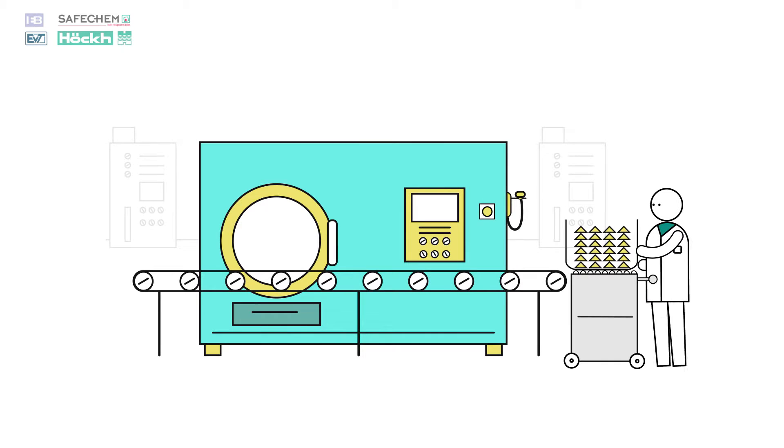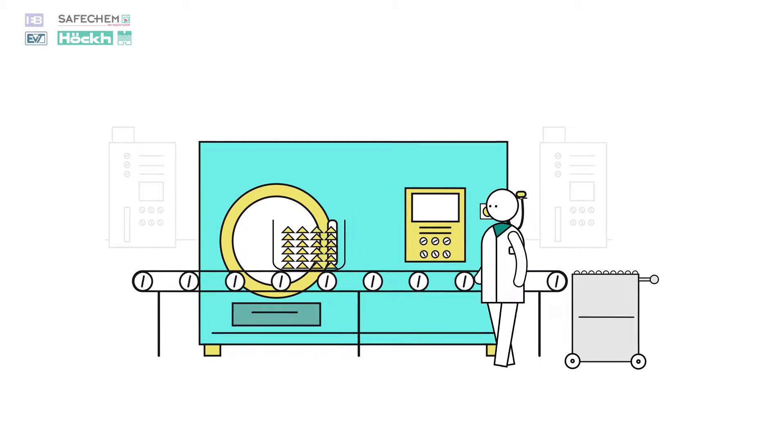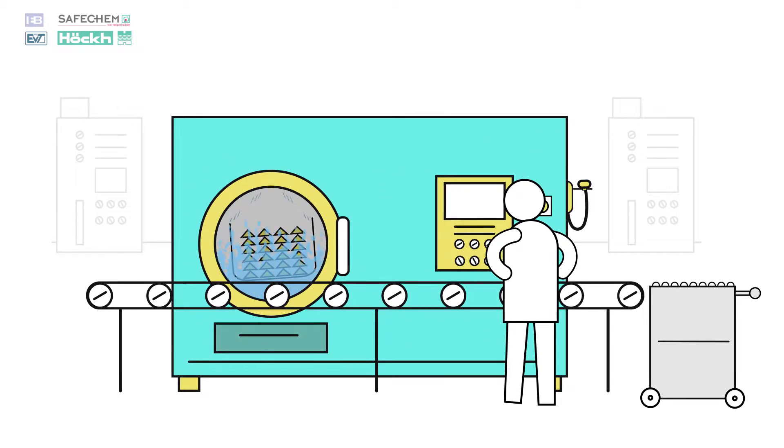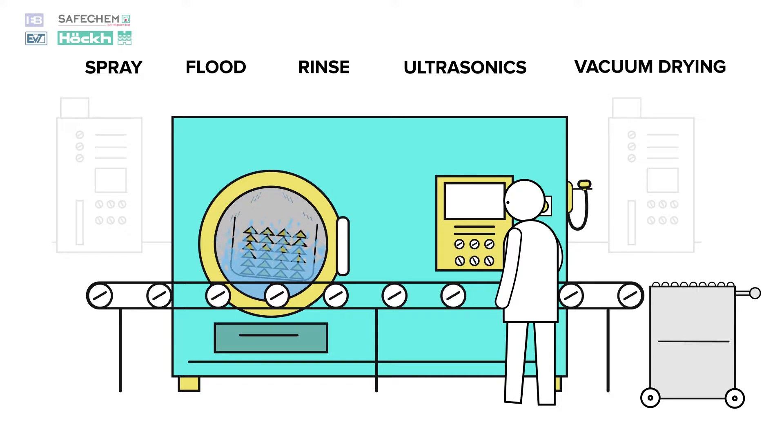The process is simple. Firstly, the operator places parts inside a basket which can be automatically fed into the cleaning system. Secondly, and just like other washing systems, we can have a number of processes like spray, flood, rinse, ultrasonics and vacuum drying.